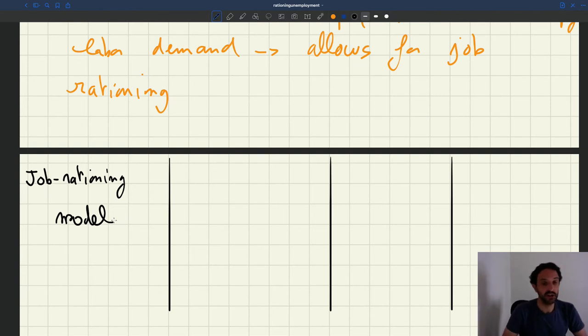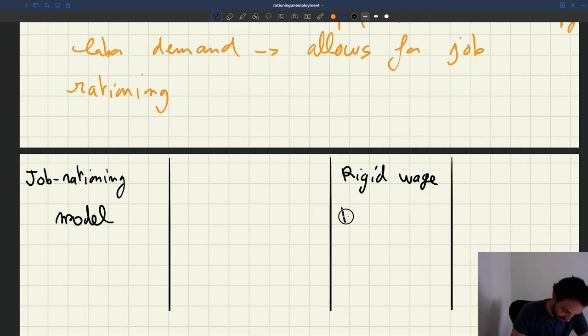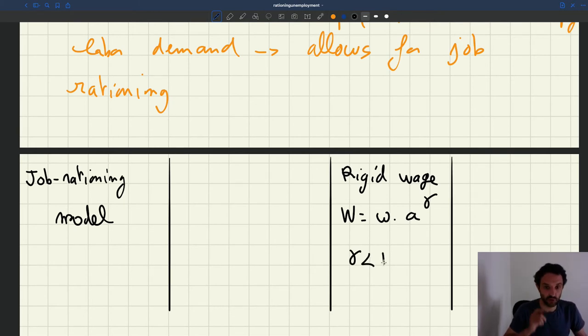We are not going to refer to bargaining, which leads to wages that are too flexible. So we are going to assume a rigid wage. The wage is going to be some scalar omega, productivity A, with an elasticity gamma. Gamma strictly less than one because we want some wage rigidity.